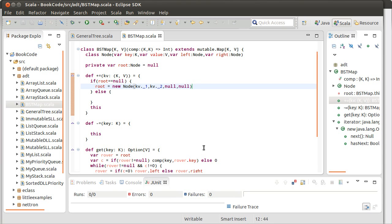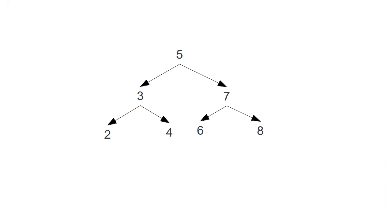So what should happen after that? If I were going to add a 1 to this tree, the 1 is less than the 5, less than the 3, less than the 2, and 2's left is null, so I would stick it right there. In general, the approach is we should walk and descend through the tree in our standard approach — compare, and either go to the left or the right — until we get to a situation where it's supposed to be null. And once we hit that, we should place it there. That's the approach we want to take.